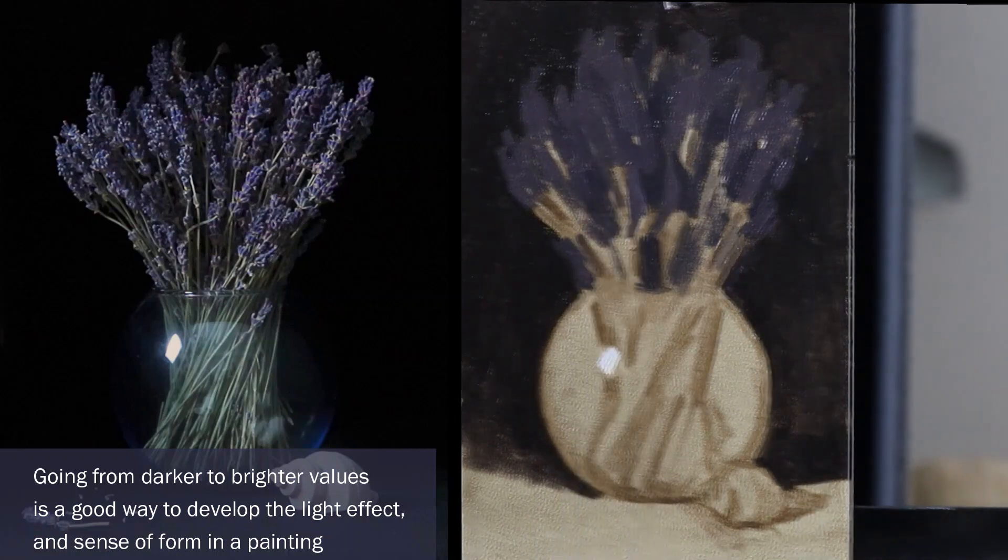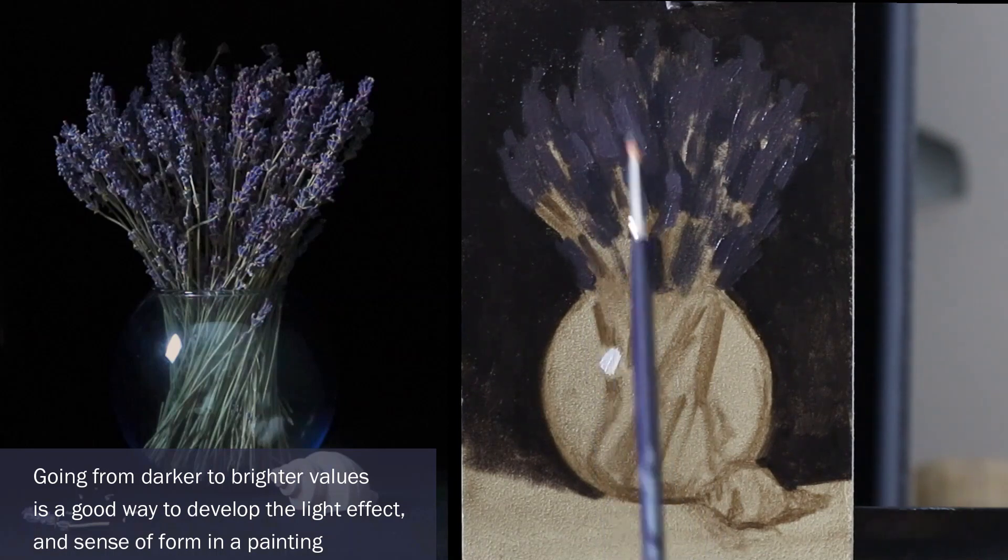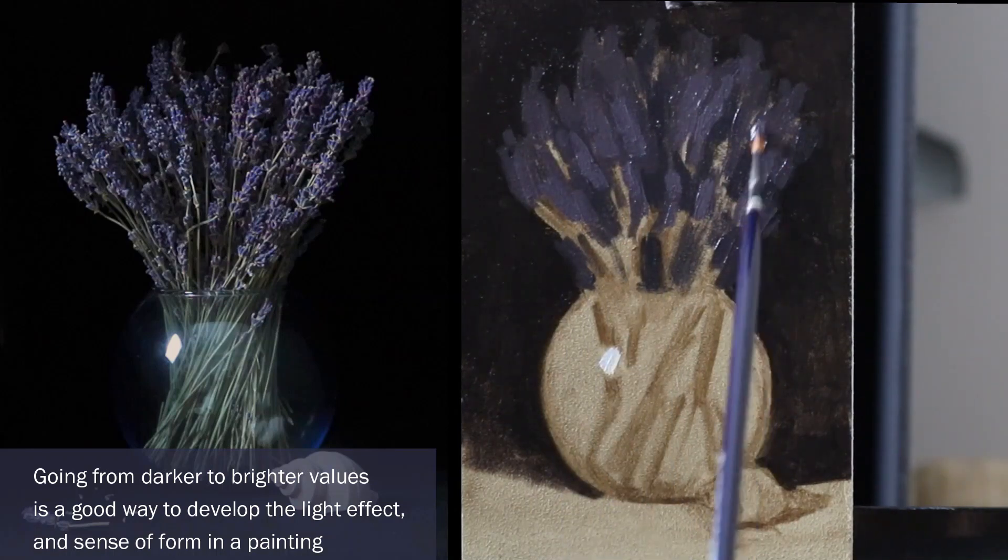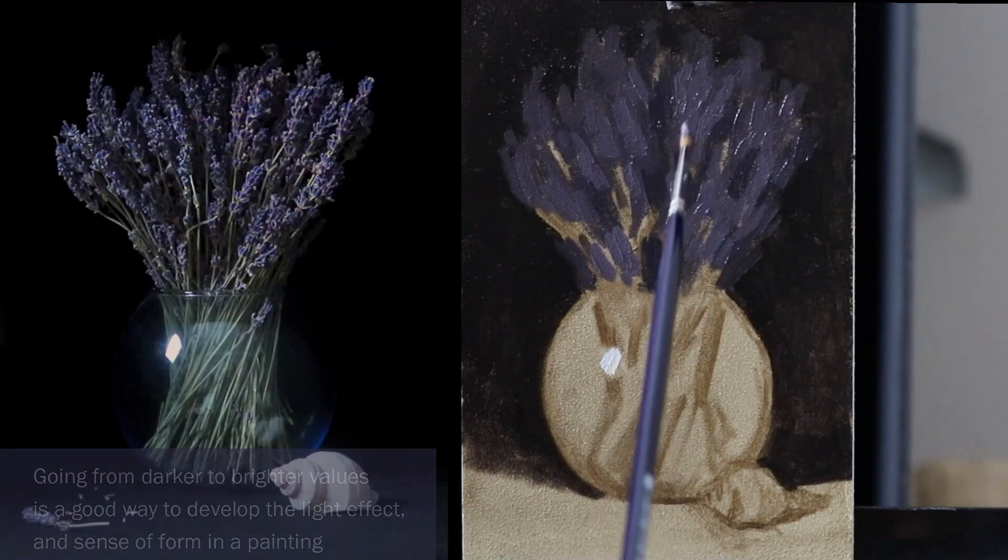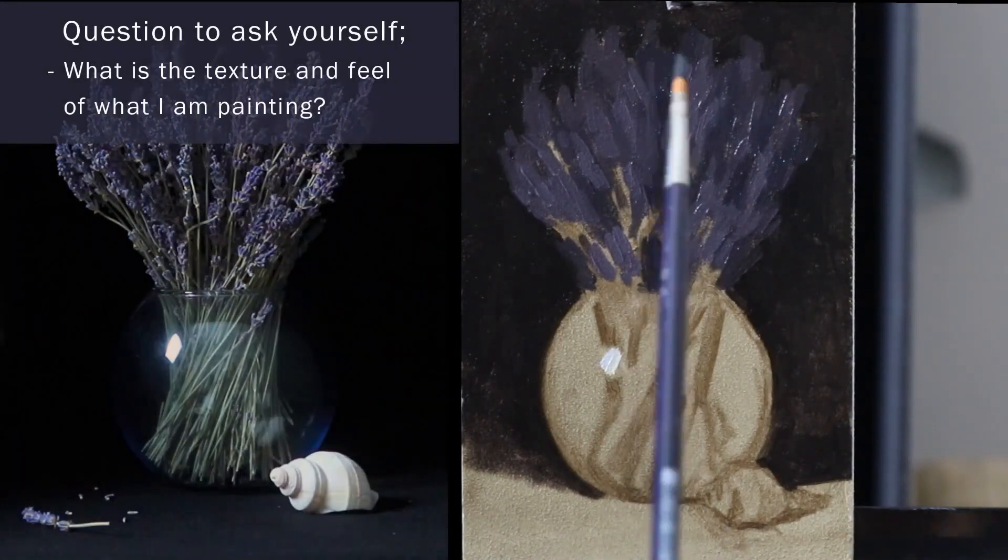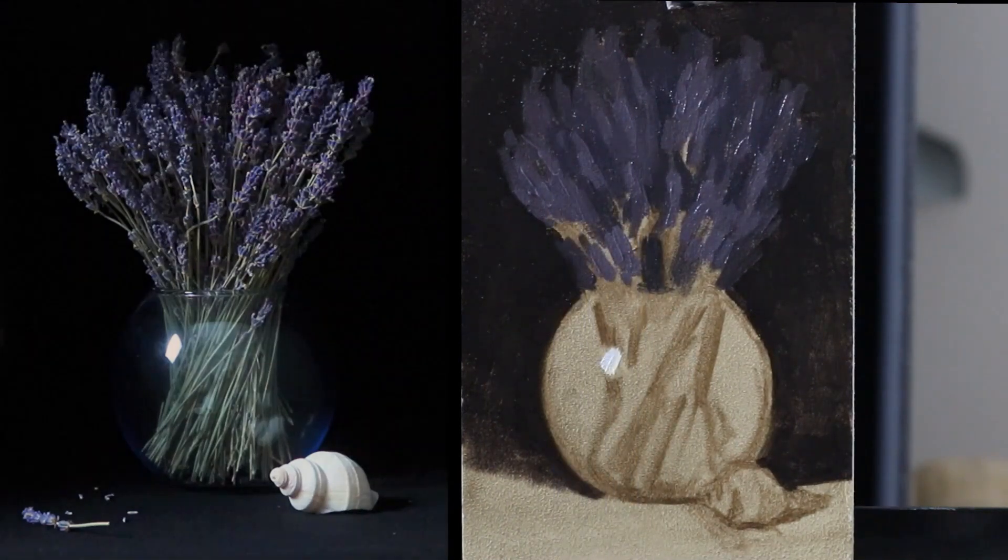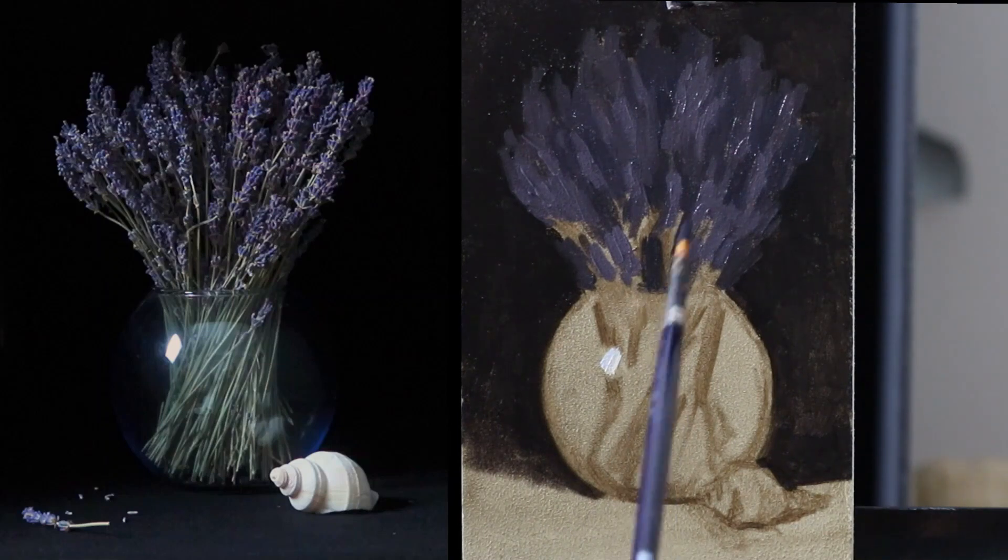One thing to think of when painting these flowers is the direction that they are moving in. This will help you get the character of them. When I'm painting I'm also thinking of the texture and the feel of what I'm observing to try and implement that in my study. This is an important aspect of getting to know the objects in your setup that will help you create the main painting.